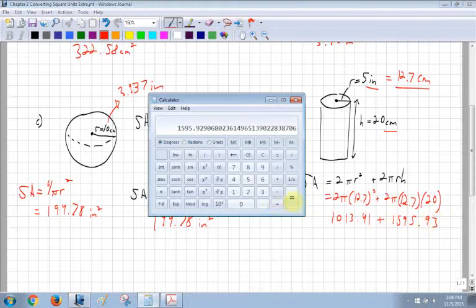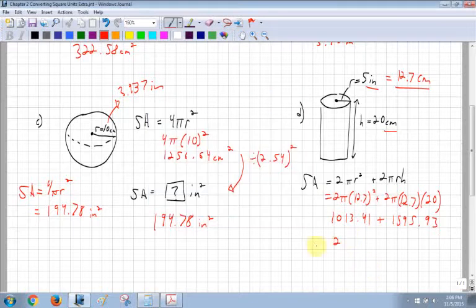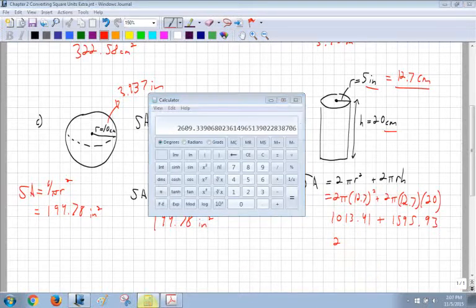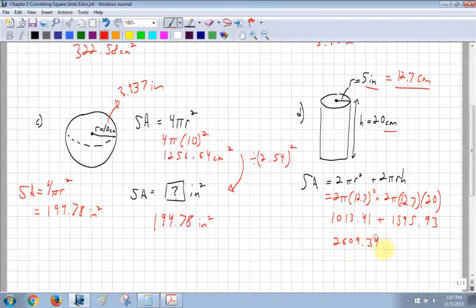I add them both together. I can just leave that in my calculator. 1013.41, I end up getting 2609.34. And that is in centimeters squared.